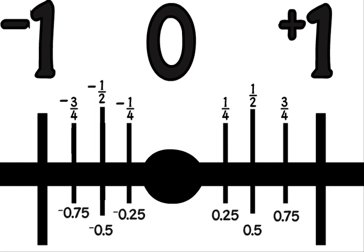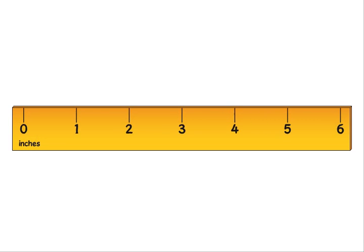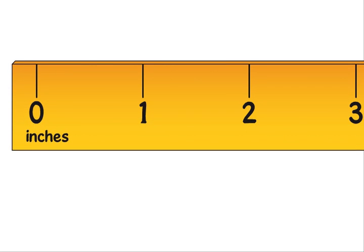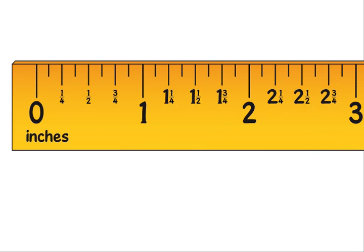We use the idea of number lines when we measure things. An inch ruler works like a piece of a number line. The inch marks show whole numbers. The marks between show fractional parts.